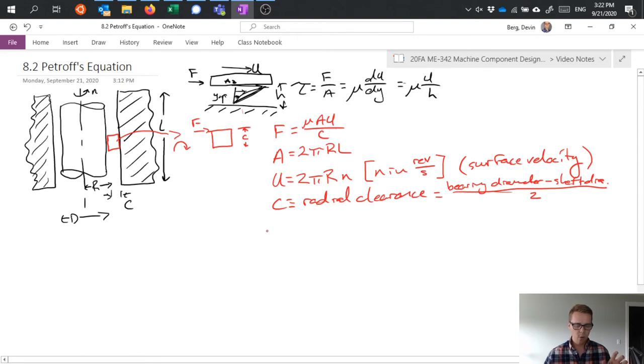Now if I substitute all of this stuff into a torque equation, what I'm actually finding is then the torque which has to exist to overcome friction in order for my shaft to rotate at this speed.